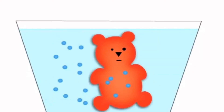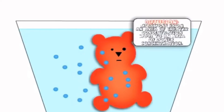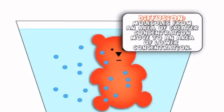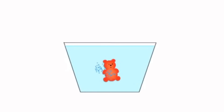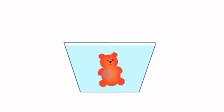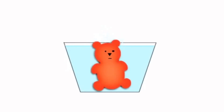Selectively permeable means that some molecules can move through the membrane while others cannot. Movement through the membrane is called transport. Diffusion and osmosis are passive forms of transport, which means that they do not need energy to move from areas of high concentration to areas of low concentration.